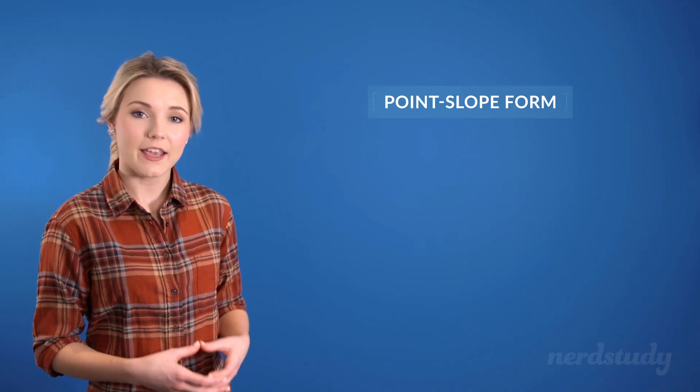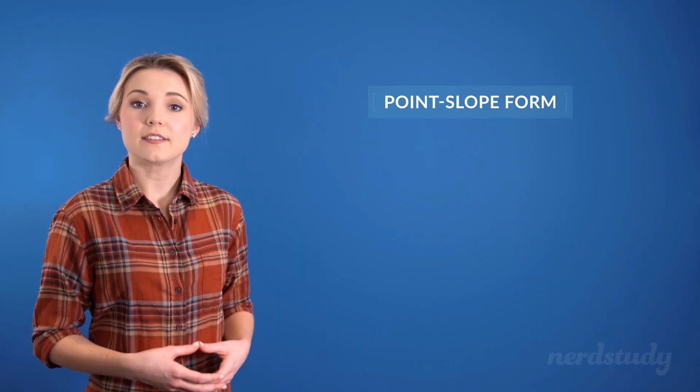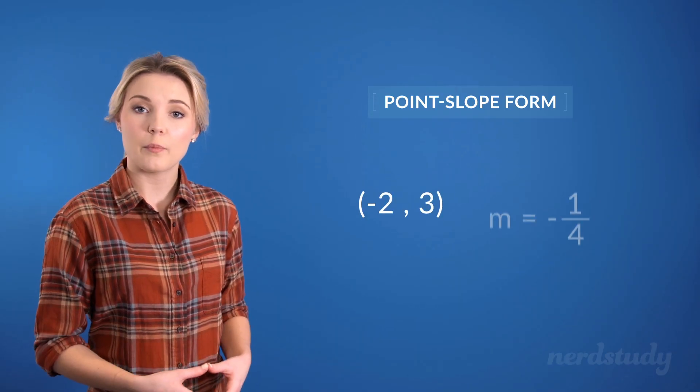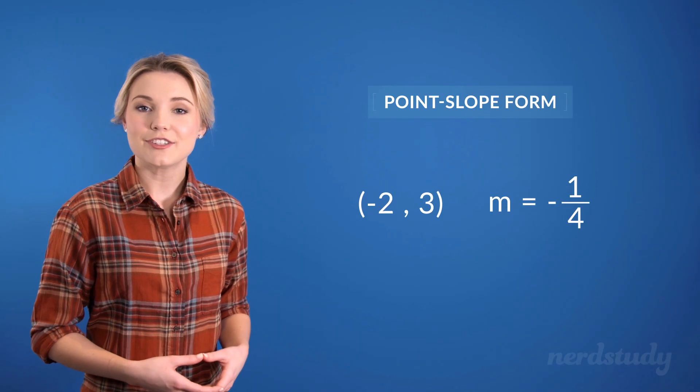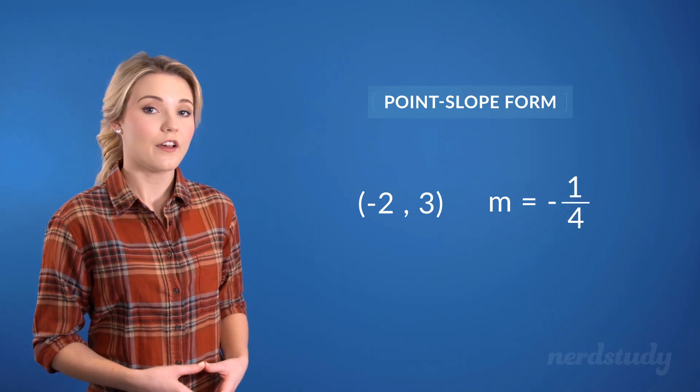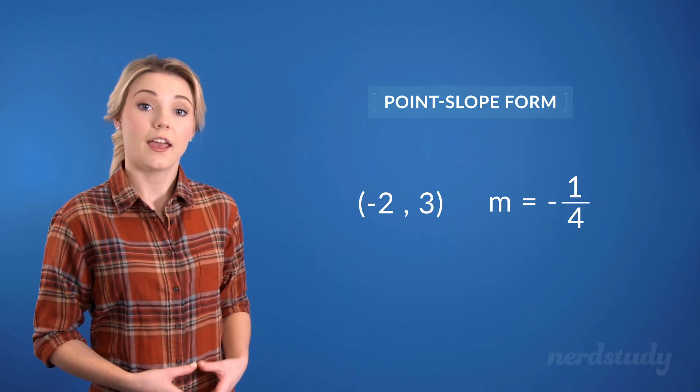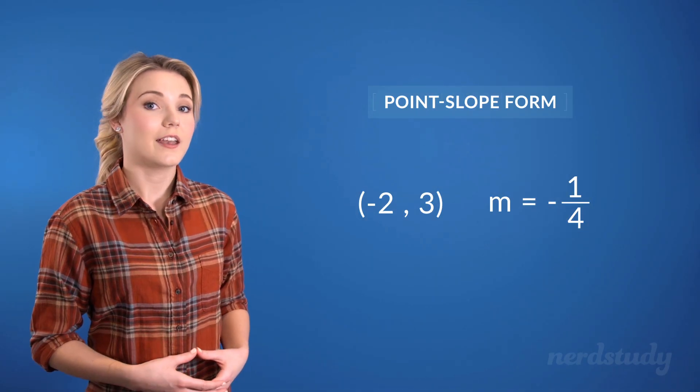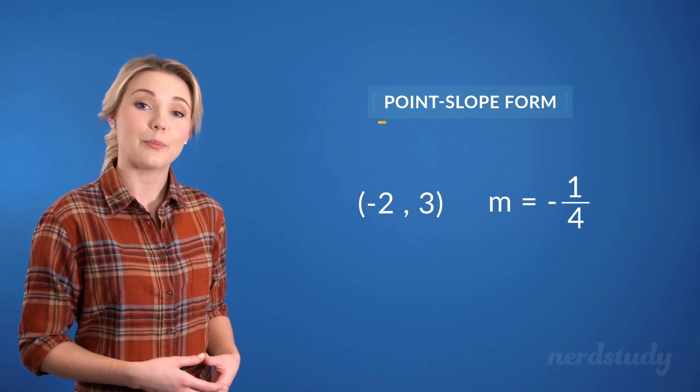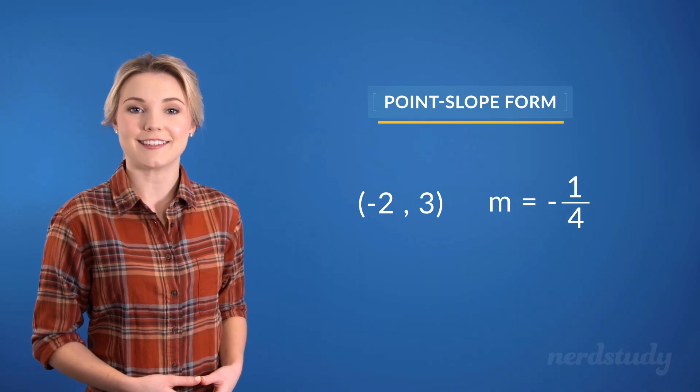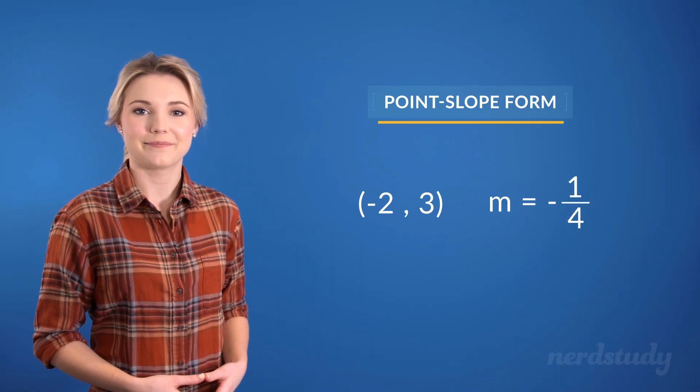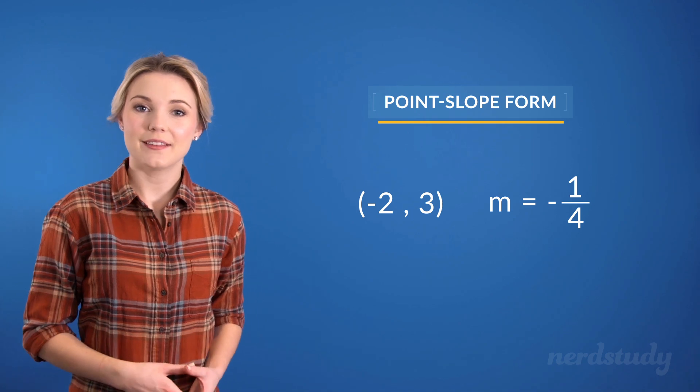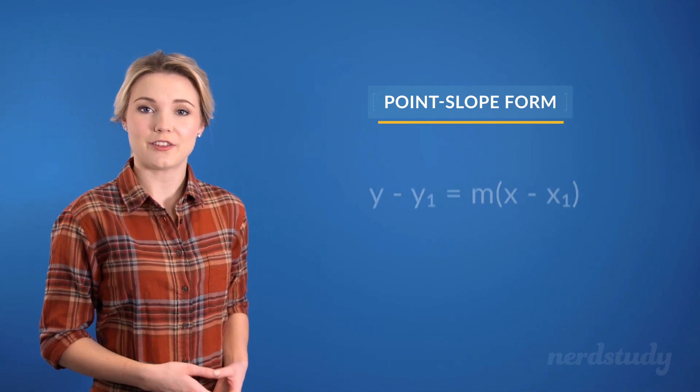This form is particularly good to use when the information provided is of a single point of a line and the slope of a line. These two pieces of information are enough to complete a linear equation, and if we are indeed given a point and a slope, then it is only fitting that we would use the point-slope form to most easily get the final linear equation. So, let us present to you the point-slope form.